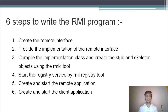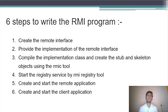These are the six steps to write an RMI program. First, create the remote interface. Second, provide the implementation of the remote interface. Third, compile the implementation class and create the Stub and Skeleton object using the RMIC tool. Fourth, start the registry service by the RMI registry tool. Fifth, create and start the remote application. And sixth, create and start the client application.